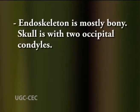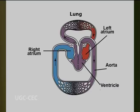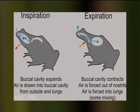Skull is with two occipital condyles. Vertebrae are centrous, pseudocentrous and notocentrous. Heart is divided into two atria and one ventricle — that is, the heart is three-chambered — and it has conus arteriosus provided with valves. Red blood corpuscles (RBCs) are biconvex, oval and nucleated.